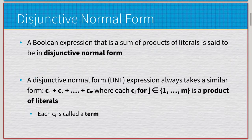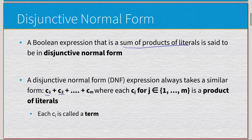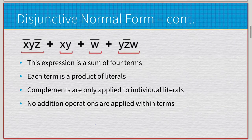Before we get to functional completeness, we need to look at two different types of forms our Boolean expressions can take. The first one is disjunctive normal form, which is a sum of products of literals. We have some format of C1 plus C2 plus so on through Cm, where each Cj for j from 1 through m is a product of literals.